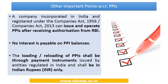Open system PPIs are issued by banks and can be used at any merchant for purchase of goods and services — any shop, market, or website. Banks issuing such PPIs also facilitate cash withdrawal at ATMs, POS terminals, or through business correspondents.